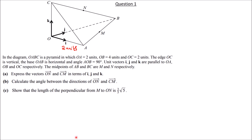Next, OB is 4 units. OPB is 4 units. And OC is 2 units. OPC is 2 units.